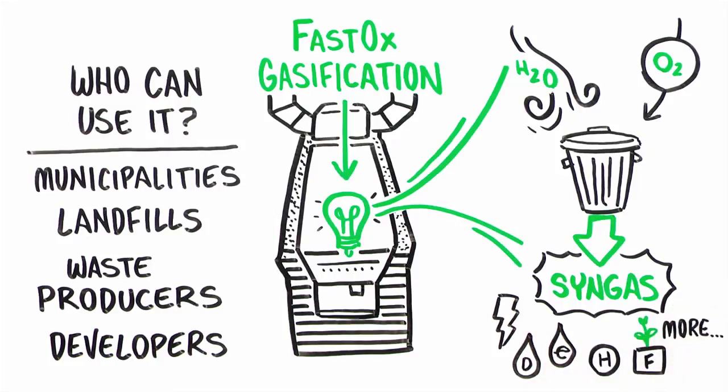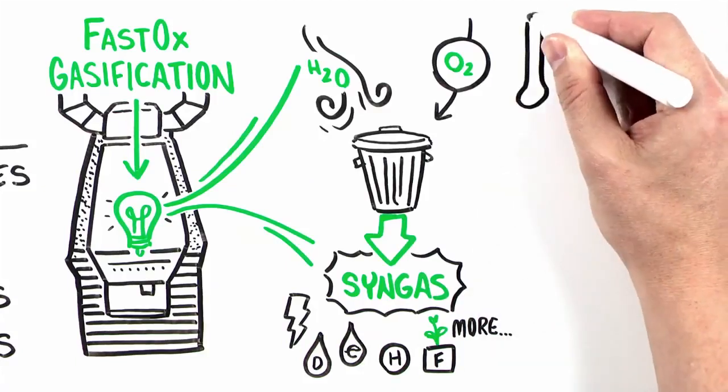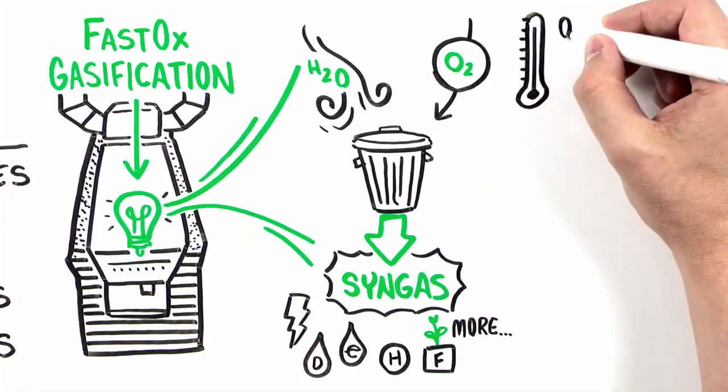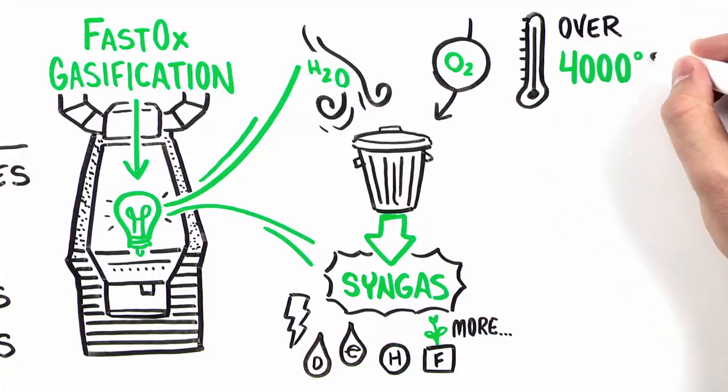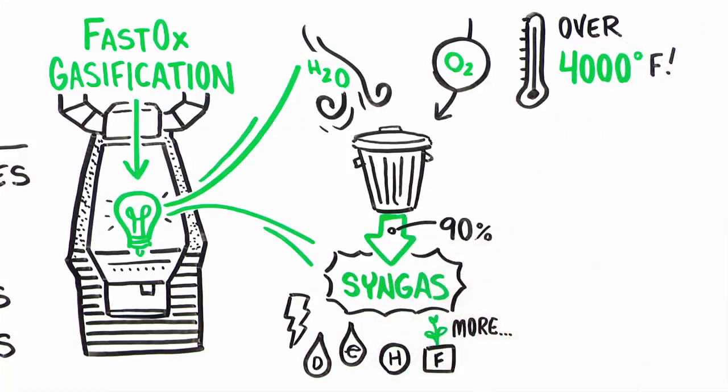How does it work? Rapidly injecting highly concentrated oxygen and steam raises the temperature above 4,000 degrees Fahrenheit. 90% of waste volume is converted to syngas.